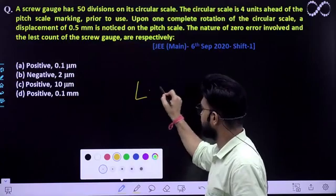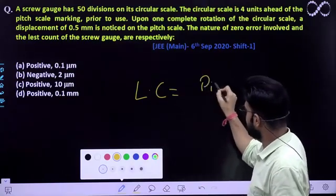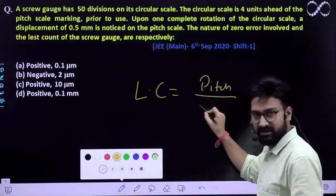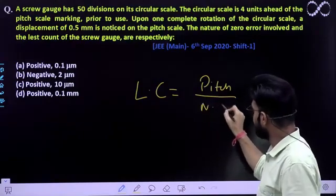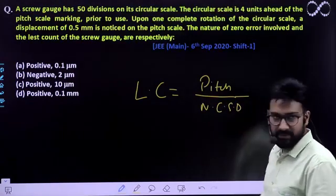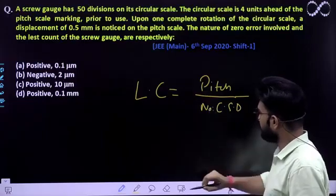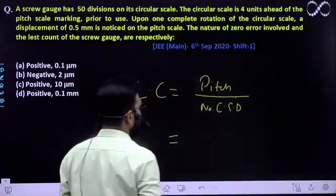Least count kya hota hai? Least count is nothing but pitch divided by number of circular scale divisions. So number of circular scale divisions. To number of circular scale, least count pitch kitna hai? Pehle yeh dekhho.